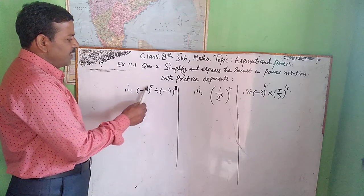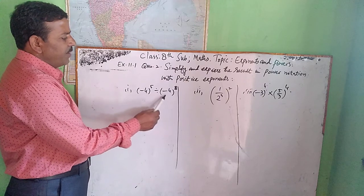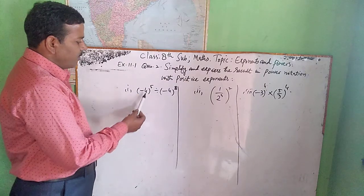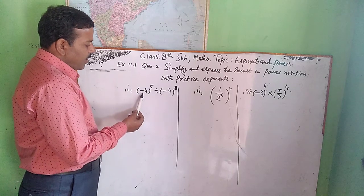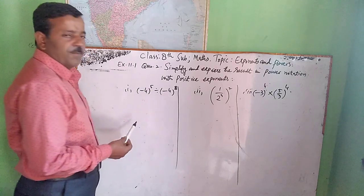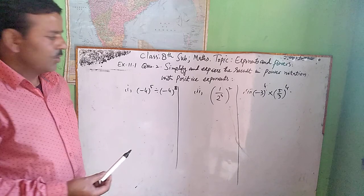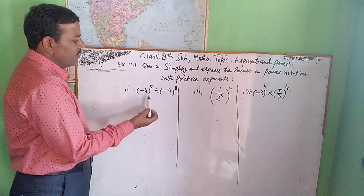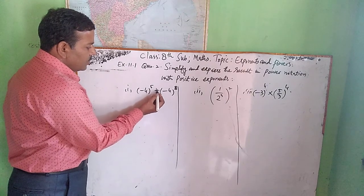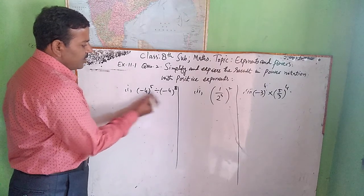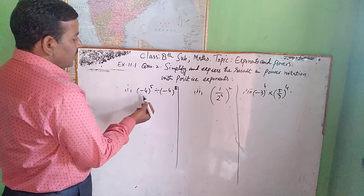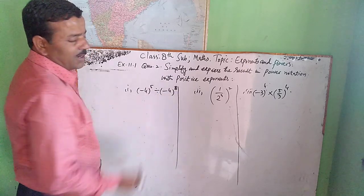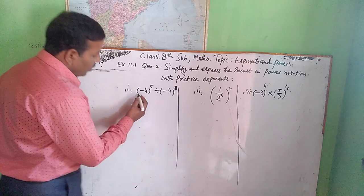The first part is minus 4 raised to power 5, divided by minus 4 raised to power 8. Observing this, minus 4 and minus 4 — the bases are the same. When bases are the same in division, we subtract the powers.